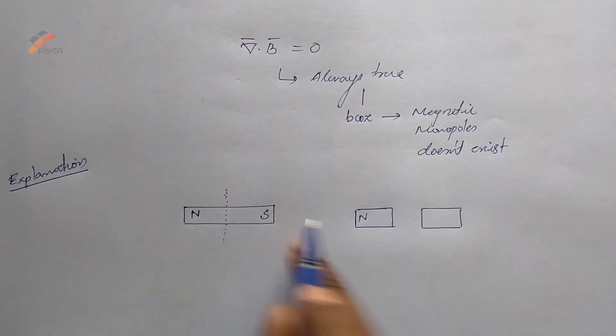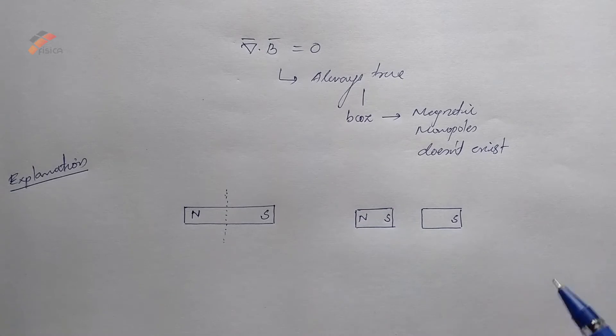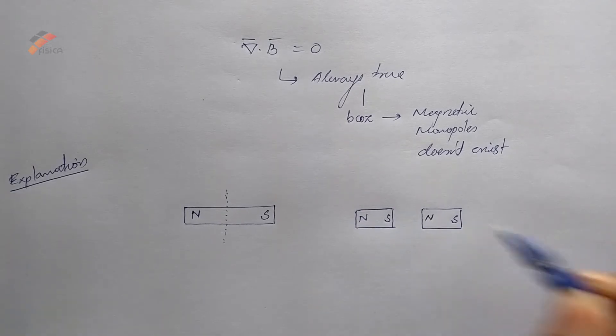This is definitely north and this is definitely south, but the problem is you can't separate the north and south poles. Automatically here there is a south pole develops and here a north pole develops.